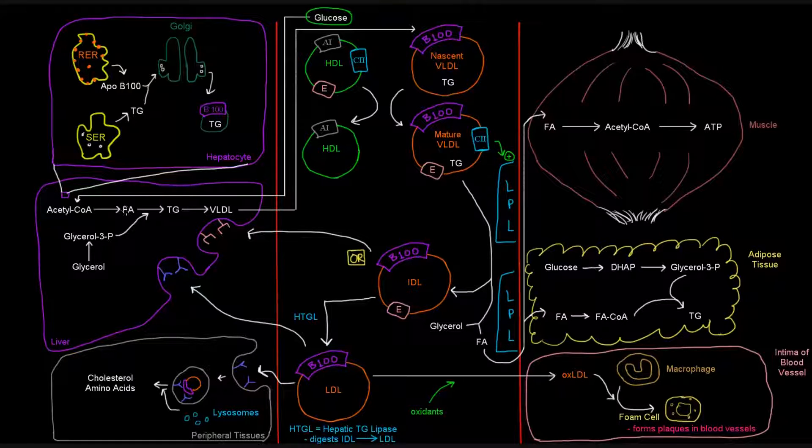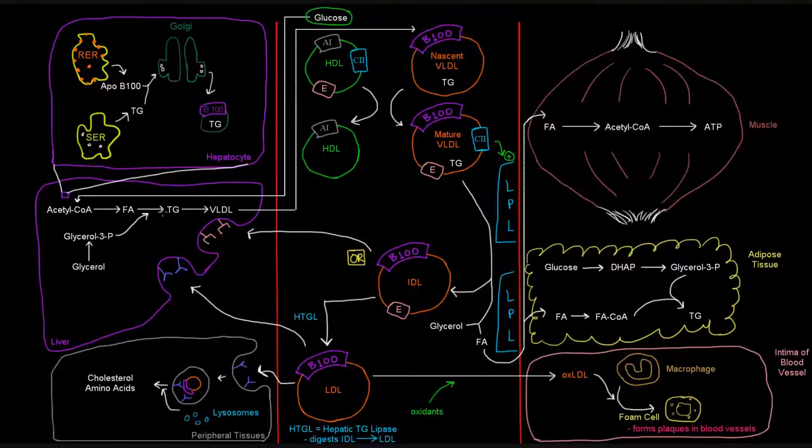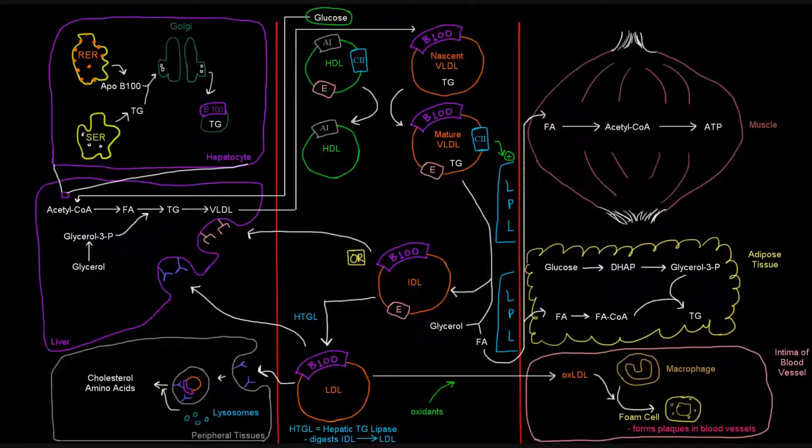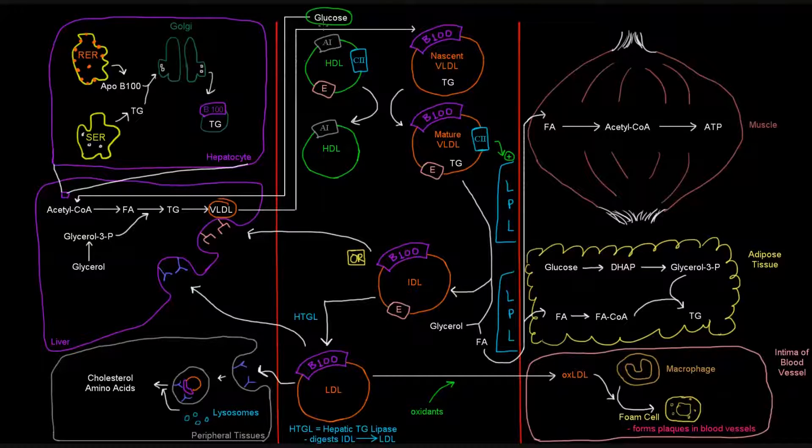We'll go to acetyl-CoA. This acetyl-CoA can give us fatty acids. These can join glycerol-3-phosphate, and they can join triglycerides to give us these VLDLs. Let me circle that in orange, since I made these VLDL particles orange, and then it'll be sent out into the blood as a nascent VLDL particle.